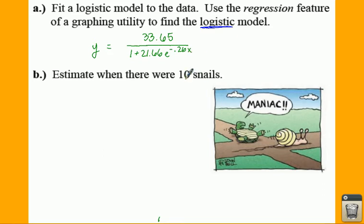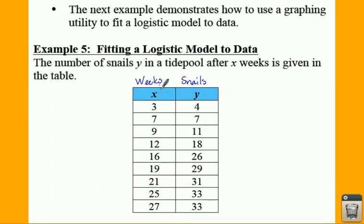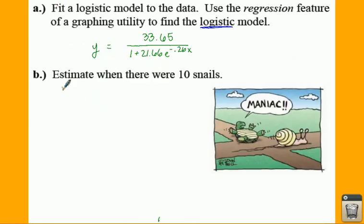Now what we want to figure out is we want to estimate when there are 10 snails. So 10, is that going for x or going for y? Well, if you remember back here, x is your number of weeks, y is your number of snails, so we are going to put a 10 for the y. So 10 equals 33.65 all divided by 1 plus 21.66 e to the negative 0.26x.